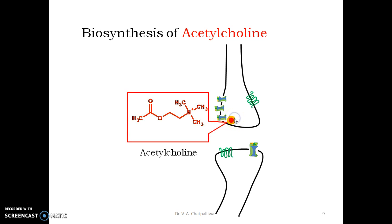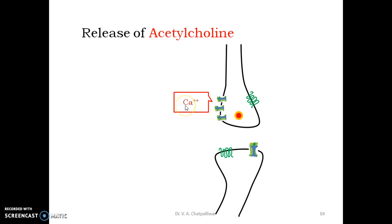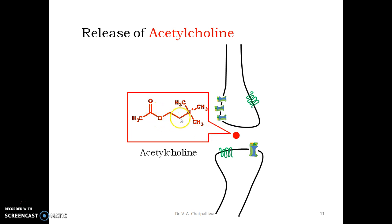On arrival of an action potential, calcium ions present extra-neuronally penetrate through ion channels that open in response to the change in voltage. The increase in intracellular calcium concentration triggers the migration of storage vesicles to the periphery, ultimately releasing acetylcholine into the synaptic cleft by exocytosis. In response to one action potential, several thousand molecules of acetylcholine are released.